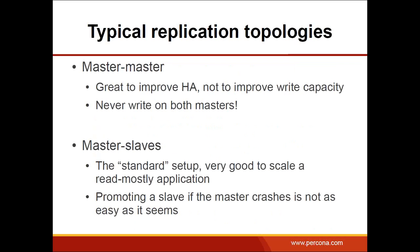Let's look at typical replication topologies. The first is master-master — it's a cheap way to improve high availability, though in itself it's not a complete HA solution. Keep in mind that master-master does not improve write capacity, because all writes on a master will be serialized through replication. And very importantly, never write on both masters — that's the best recipe for disaster.